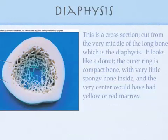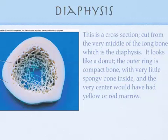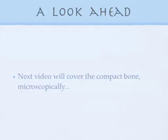Finally, if we were to take a cross section — cut through the diaphysis, kind of like cutting a tree trunk and looking at the inside — this is what it would look like. The compact bone is around the outside, there is a little bit of spongy bone that's not as dense on the inside, and the very center is empty, where you would have had yellow or red marrow. The next video will cover the compact bone in microscopic detail.